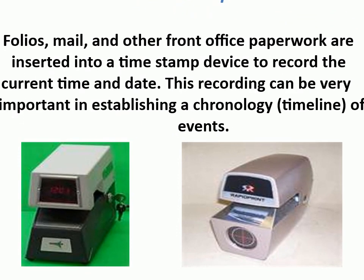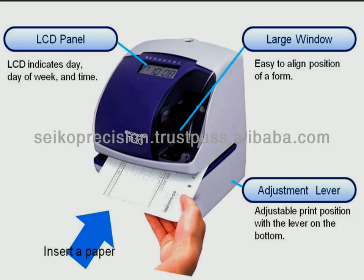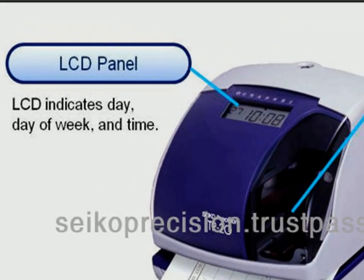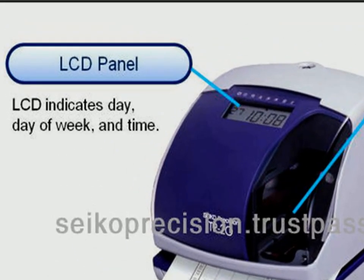Timestamp — folios, mail, and other front office paperwork are inserted into a timestamp device to record the current time and date. This recording can be very important in establishing a chronology or timeline of events.